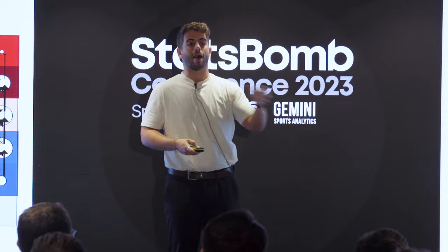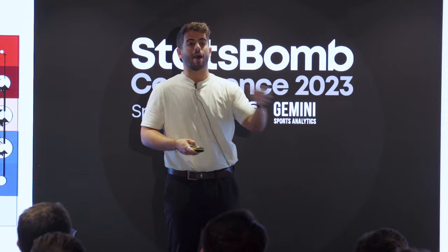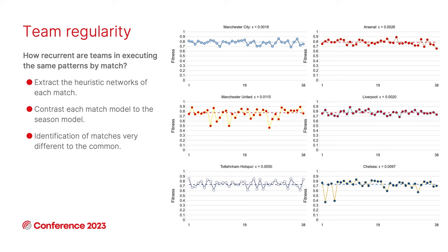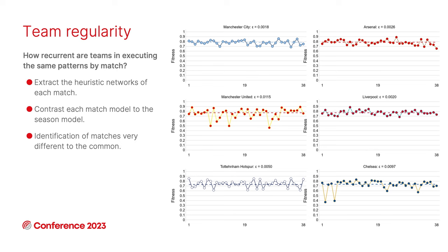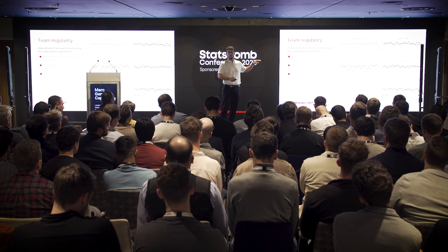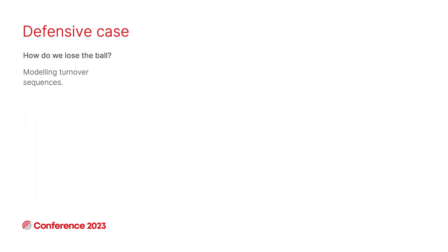What's interesting is that if we're correctly capturing team style in these models, we can go back to every match and evaluate how much that match followed the overall season model — essentially checking whether a match was consistent with the season model or was noise. This gives us a proxy for team regularity and consistency. Interestingly, teams like City, Arsenal, and Liverpool, while playing differently from each other, showed quite consistent patterns in achieving this goal. Teams like United and Tottenham were less regular. I want to emphasize this is not a success metric — it simply measures how consistently teams execute this specific task of accessing the penalty area.